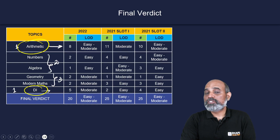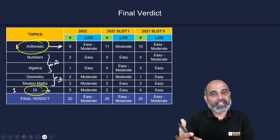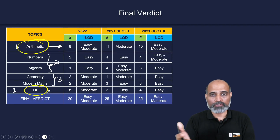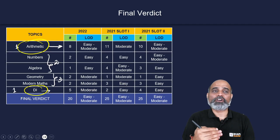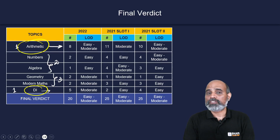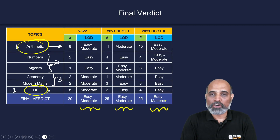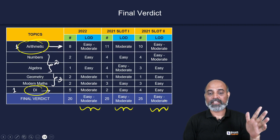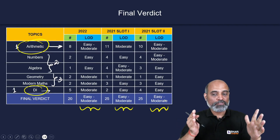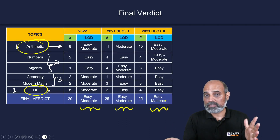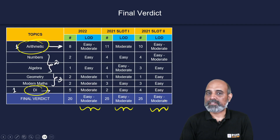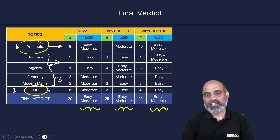You should also focus on the specific subtopics covered, since the range is limited. Topics like logarithm or sequences and series have not appeared, and the chances of them appearing this year are very low. Overall, the QADI paper is always easy to moderate — never strictly moderate or difficult. If you can solve moderate-level questions quickly, the paper will feel very easy. Expect more questions from arithmetic, fewer from numbers and algebra, and the least from modern maths and geometry.